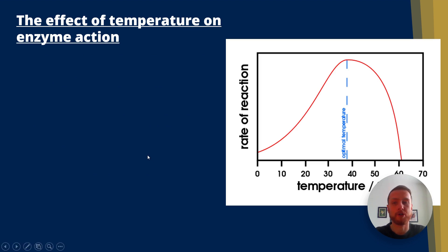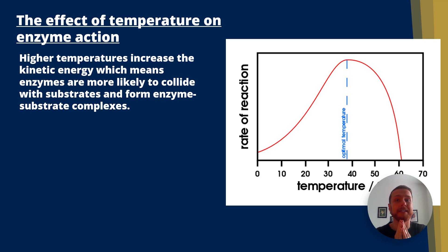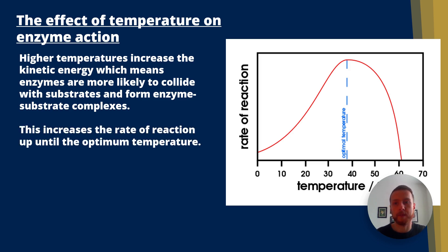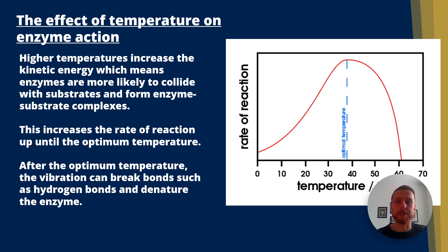Now the effect of temperature on enzyme action. Higher temperatures increase kinetic energy, which means enzymes and substrates are more likely to collide, leading to more successful collisions and more enzyme-substrate complexes. This increases the rate of reaction until the optimum temperature is reached. After the optimum temperature, the vibrational energy from the increased kinetic energy can break bonds such as hydrogen bonds and denature the enzyme.